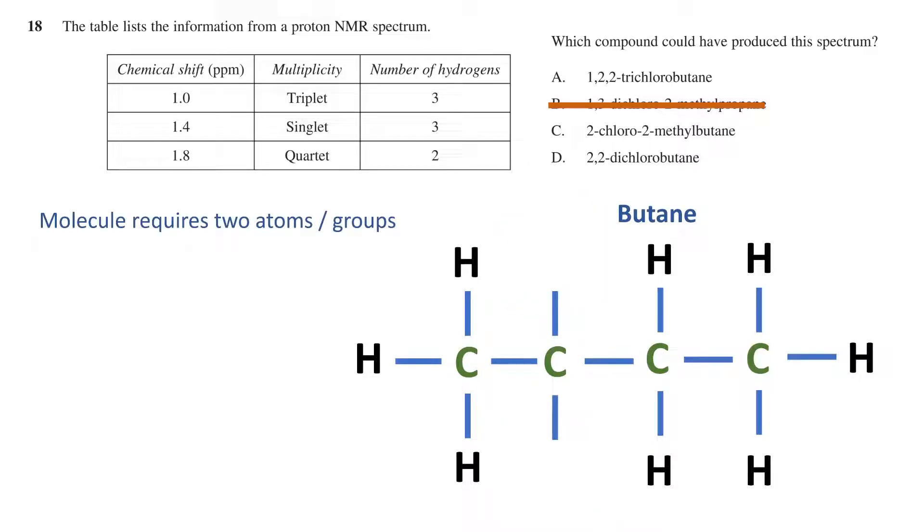The molecule requires two more atoms or groups. To ensure the lowest number in naming, we know that the order will be 1 to 4 left to right, and therefore the two blanks must be off the second carbon.